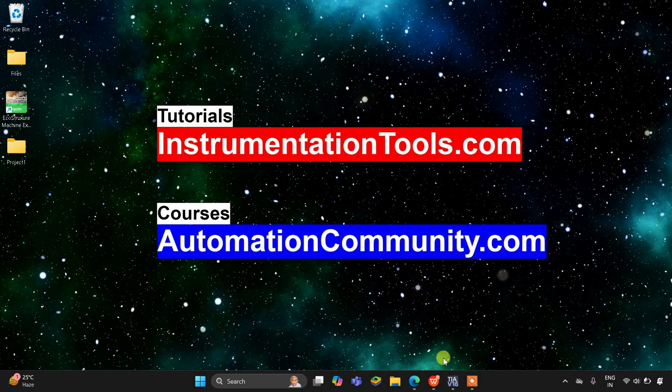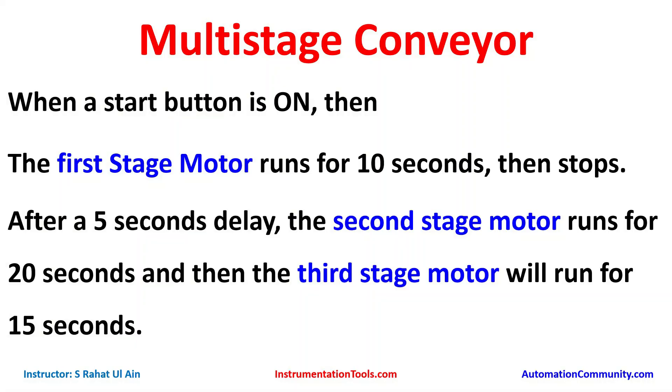Hello everyone, welcome to Automation Community. Today in this video we are going to discuss another example which will be about a multi-stage conveyor. There will be three motors that will be controlled over timers. When a start button is on, the first stage motor runs for 10 seconds.